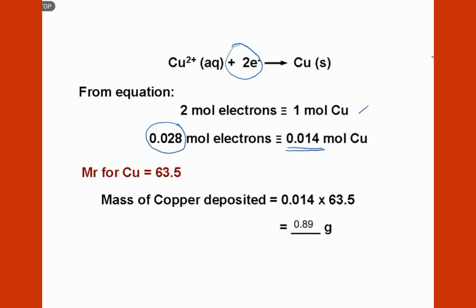Since the question asks for the mass of copper, we calculate it using the relative molecular mass of copper, which is 63.5 grams per mole. The mass of copper deposited equals 0.014 moles times 63.5, giving an answer of 0.89 grams.